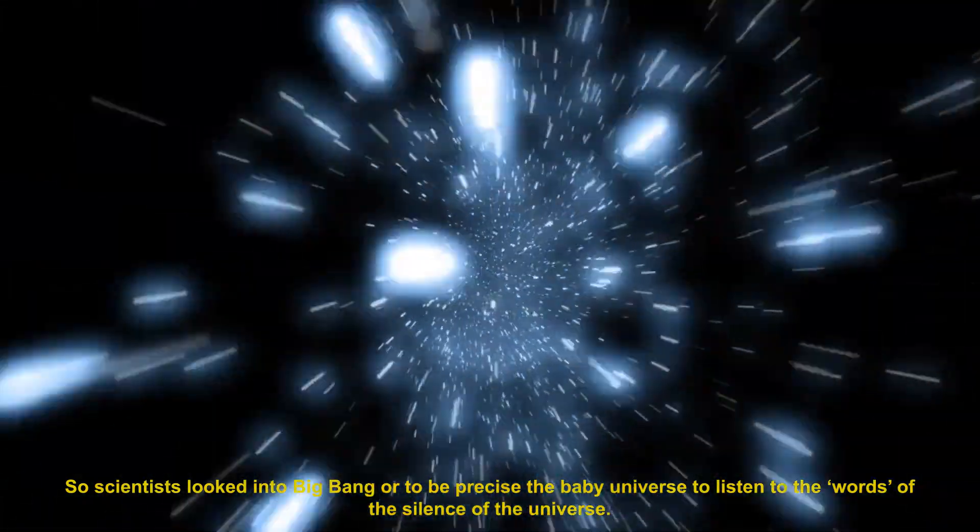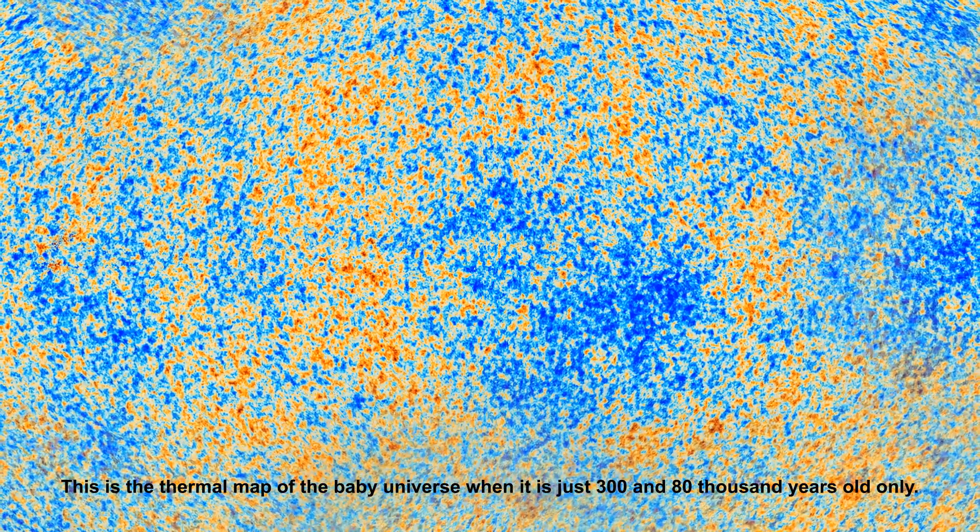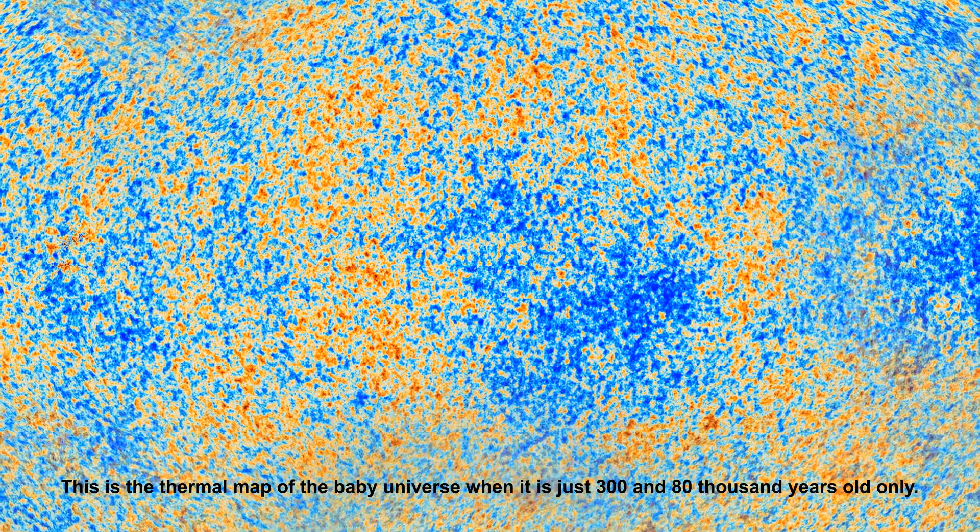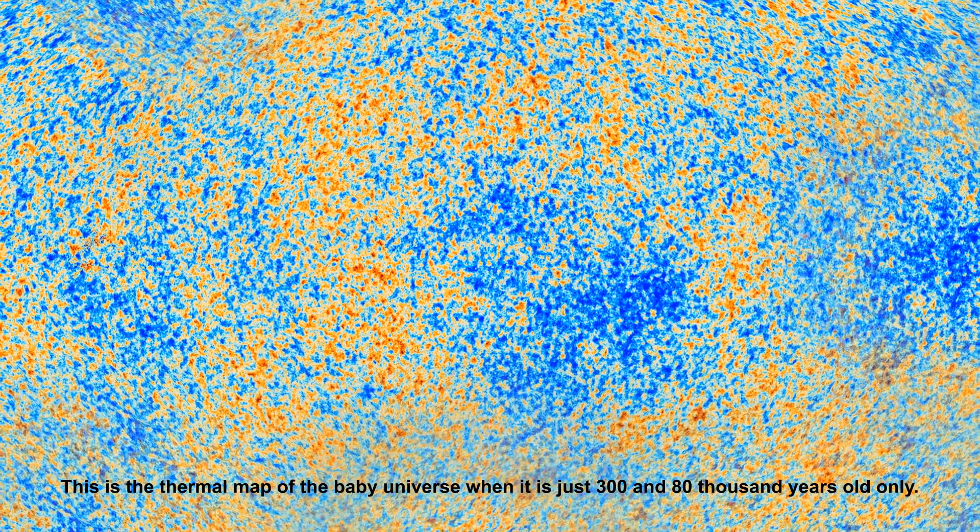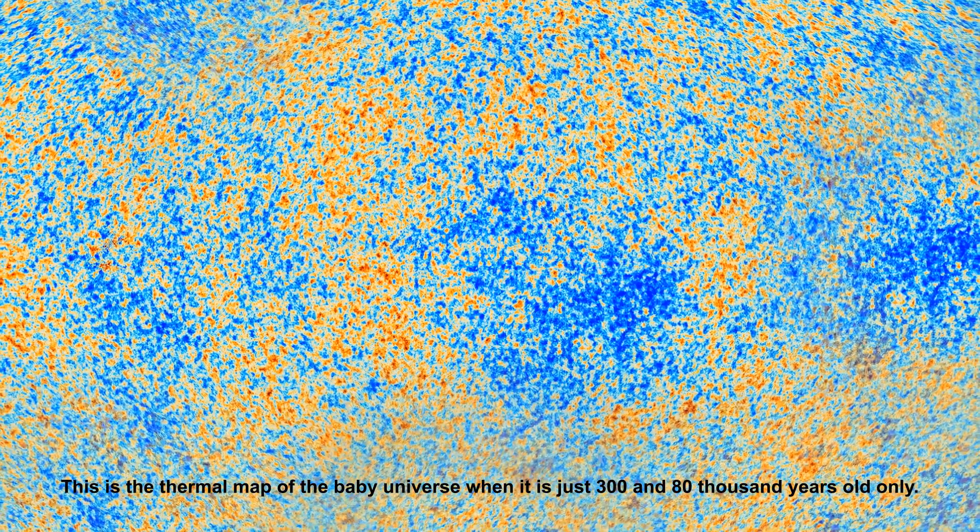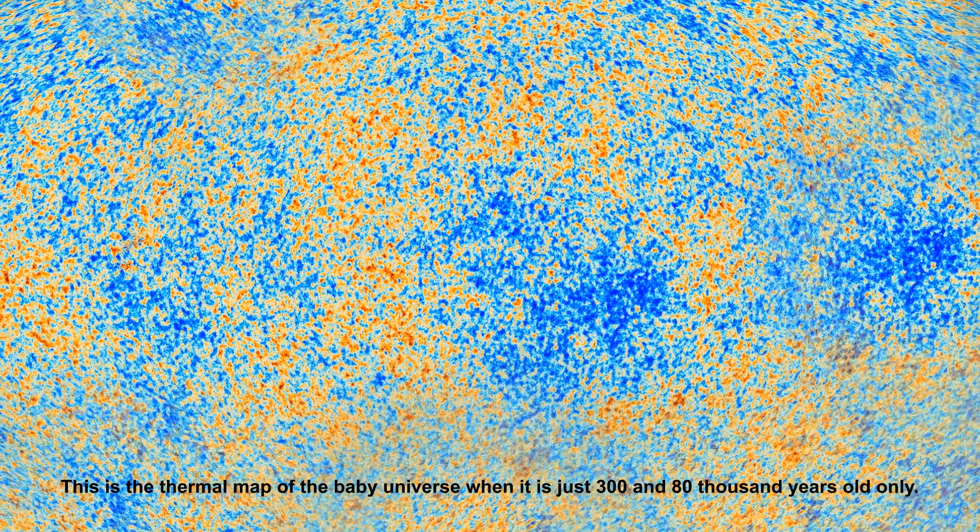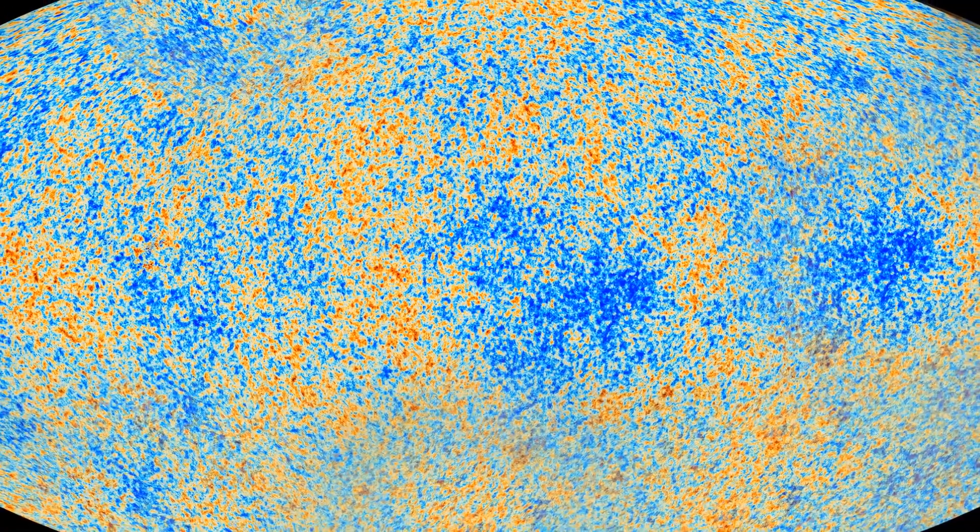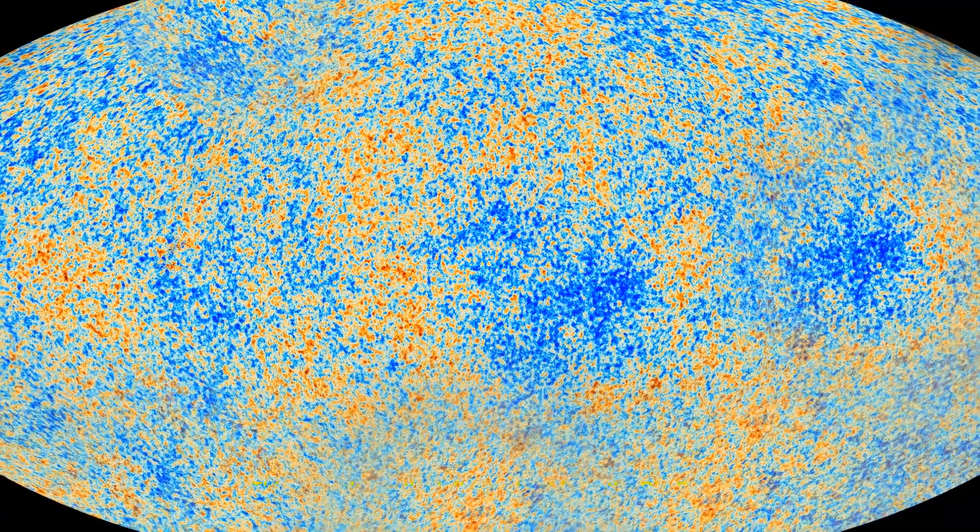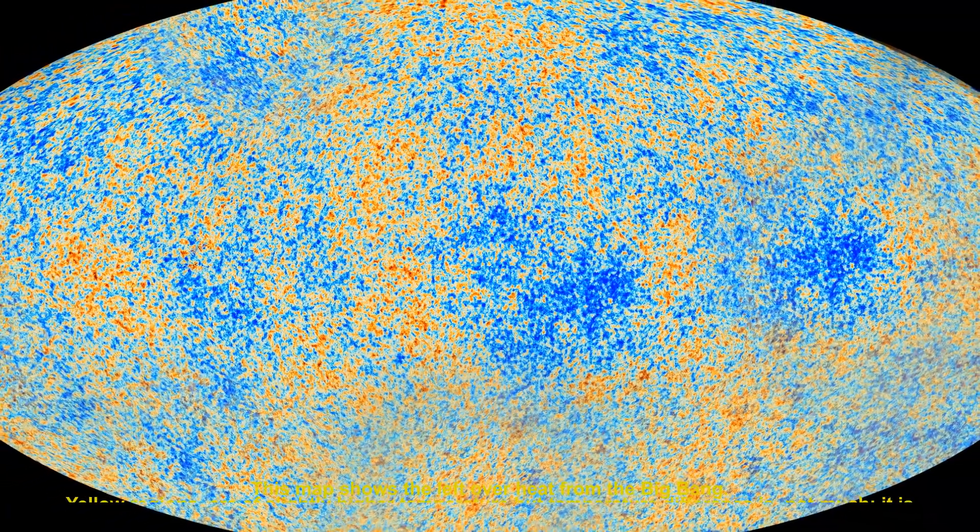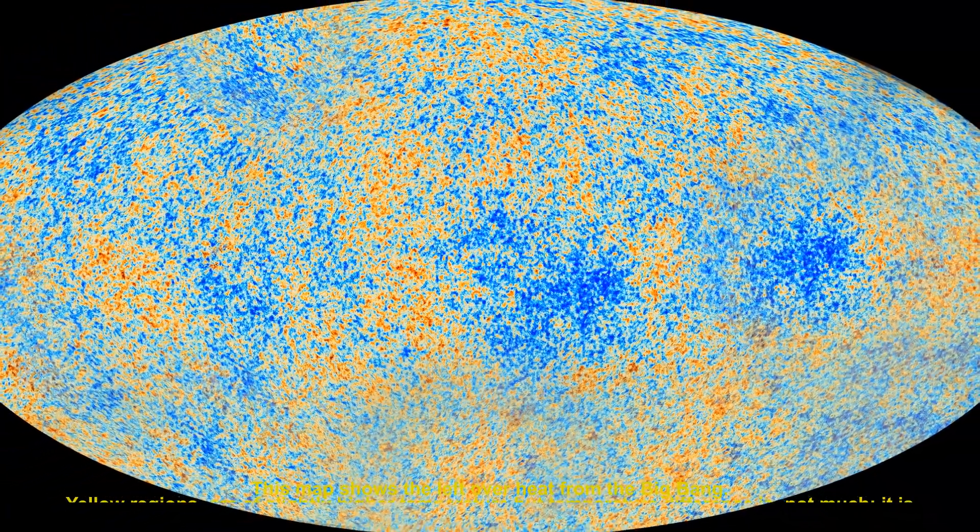They try to observe the infant universe when it is just three hundred and eight thousand years old. This is a thermal map of our universe. Artificial colors are imposed to make a clear picture of the thermal condition of the universe then. This map is showing the leftover heat from the big bang.